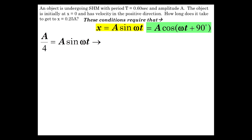Now, one-fourth of the amplitude is A sine omega t. So the A's go away. We have sine omega t is a quarter. Inverse sine of a quarter is omega t. Let's divide by omega. So t is one over omega, inverse sine of 0.25.